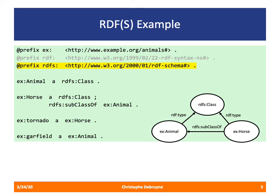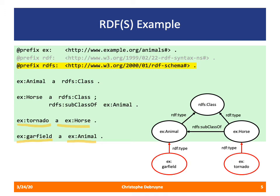Now let's introduce two instances to our RDF document. First, I declare tornado as an instance of horse — tornado is Zorro's horse. Then I introduce Garfield as an instance of animal. We all know that Garfield is a cat, but I have not declared cat as a subclass of animal in this particular example. Graphically, Garfield is an instance of animal and tornado is an instance of horse.